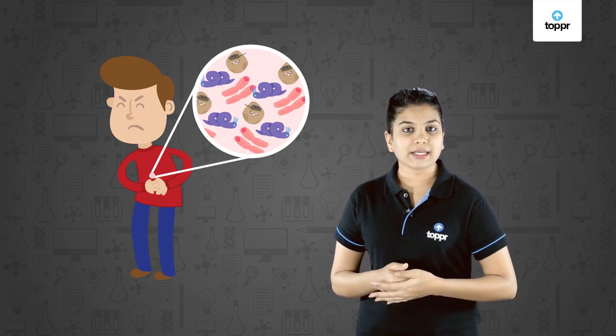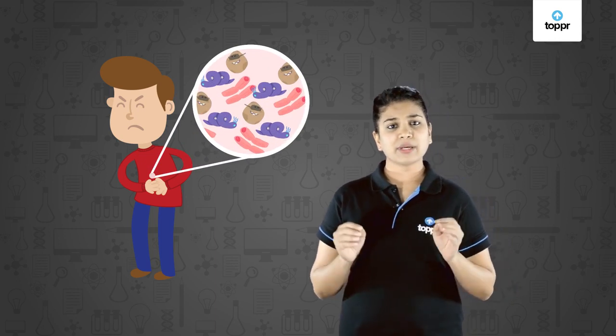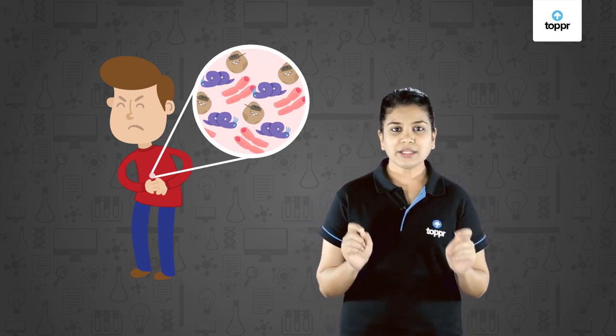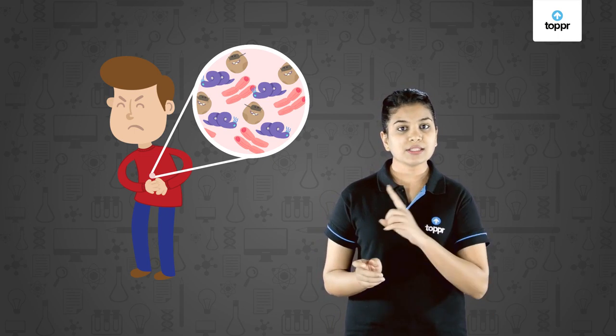For example, if this boy is suffering from food poisoning, then he would have symptoms like loose motions, stomach ache, etc. If I ask you what causes this food poisoning, you might say that it is due to an infection of bacteria. So the bacteria becomes the immediate cause of this disease.